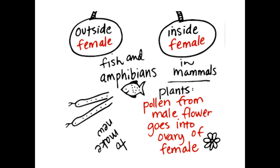Fertilization can happen inside the female, which is what happens in mammals, or it can happen outside the female. An example of outside fertilization is a frog — they release eggs and then the male releases sperm over the eggs to fertilize them. Frogs produce a large number of eggs because many won't survive outside the female. Typically, when fertilization happens outside, there will be many more eggs because it's not as safe an environment.